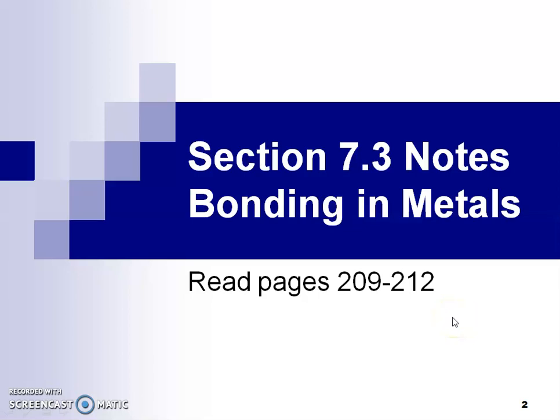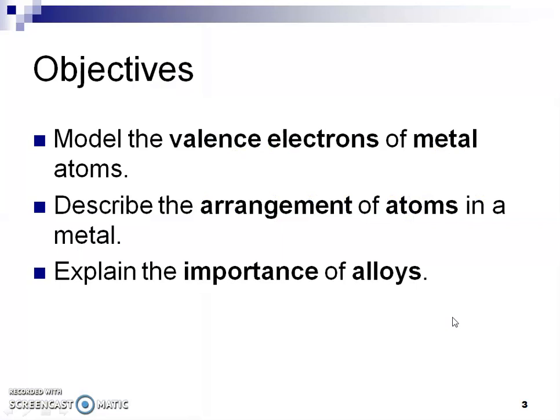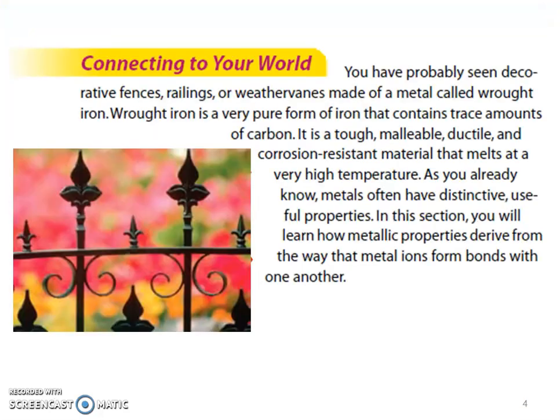This is Mrs. O'Neill for Chapter 7, Section 3, Bonding in Metals. In this section, you're going to understand the model of valence electrons in a metal atom, how the arrangement of atoms in a metal occurs, and the importance of alloys.